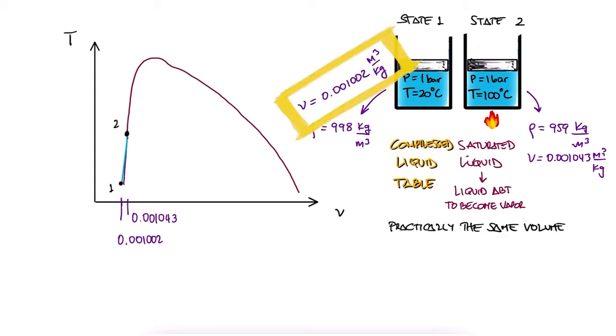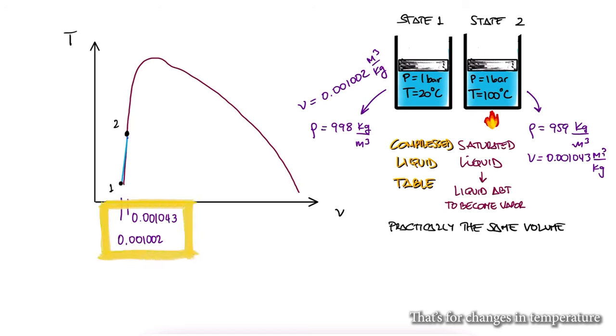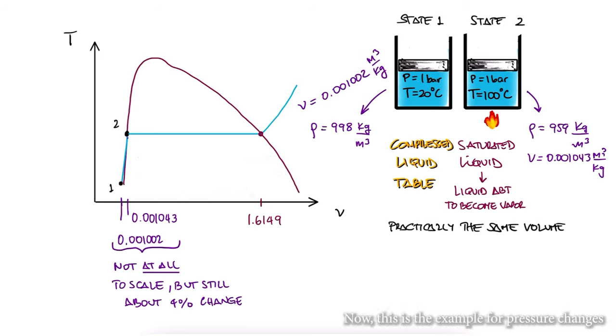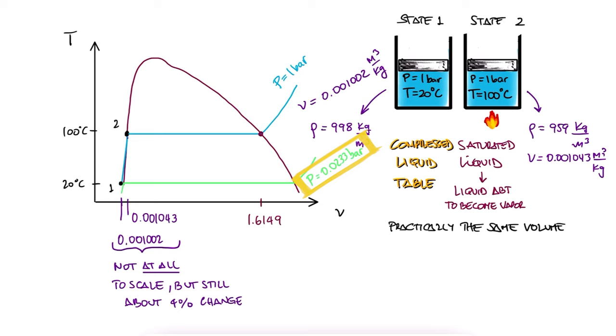For example, the specific volume at 20 degrees Celsius and one bar is different than the specific volume at 100 degrees Celsius and one bar. It's really small, especially when considering how much these values change during the saturated region, but it exists. The difference between 20 degrees Celsius at one bar or 20 degrees Celsius at 0.0233 bar, and by the way that is the saturation pressure at 20 degrees Celsius, is so small that we're not even going to consider it.